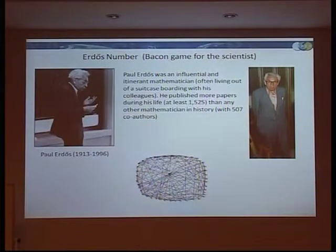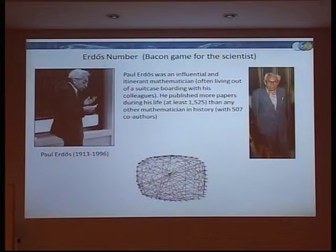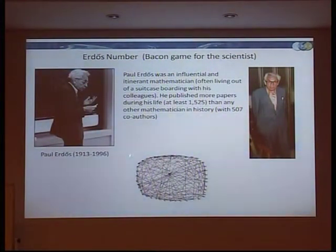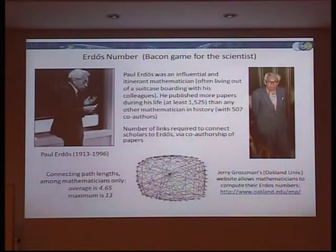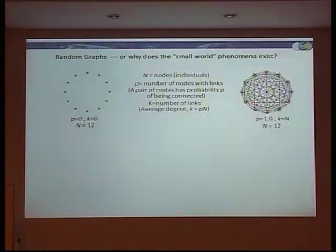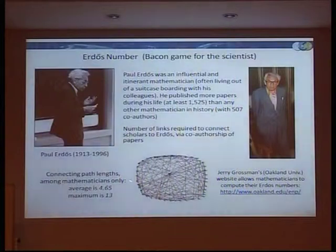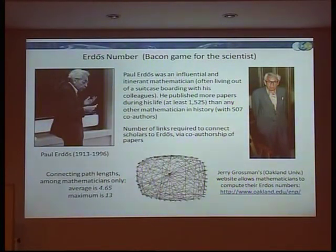This is the Kevin Bacon game for mathematicians. Erdős was a really prolific mathematician who wrote lots and lots of papers — he published 1,500 papers with 507 co-authors. If you're a mathematician publishing papers, you can look up online how far removed you are from Erdős through the co-authorship connections in the network. The six degrees of separation experiment showed six and a half steps on average. The Erdős number shows that every mathematician on average is only 4.65 steps removed from Erdős, with a maximum of 13.